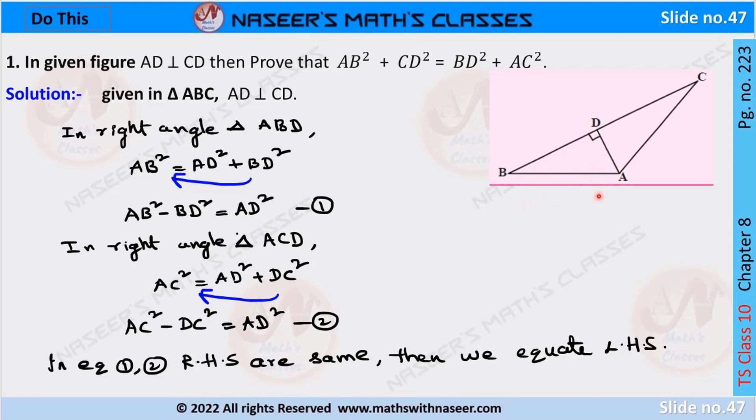By applying the Pythagoras theorem, we can write hypotenuse square is equal to sum of the squares of the two sides. So we can write AB square is equal to AD square plus BD square. By transposing BD square from RHS to LHS, it can be written as AB square minus BD square is equal to AD square.